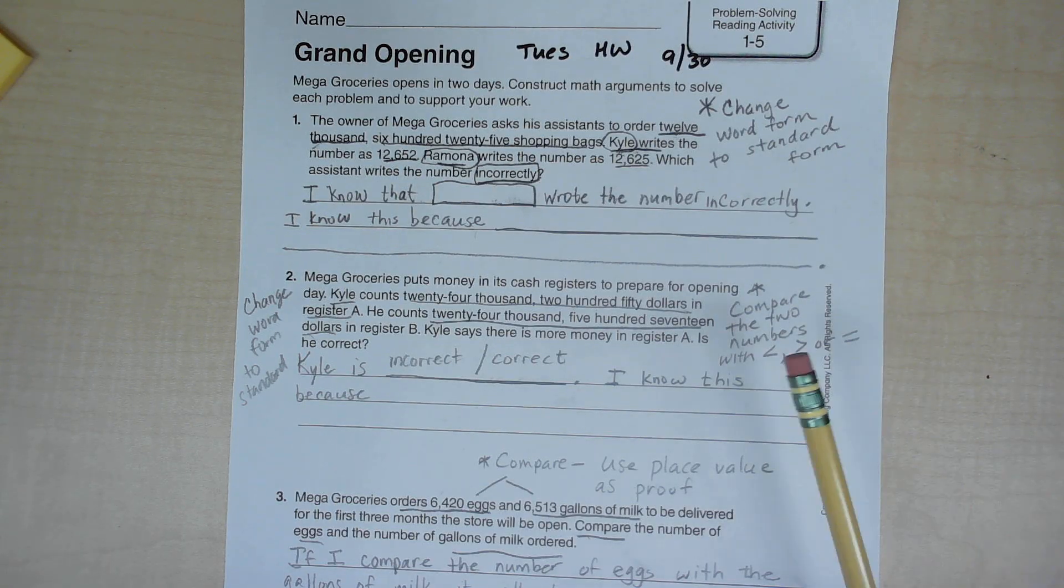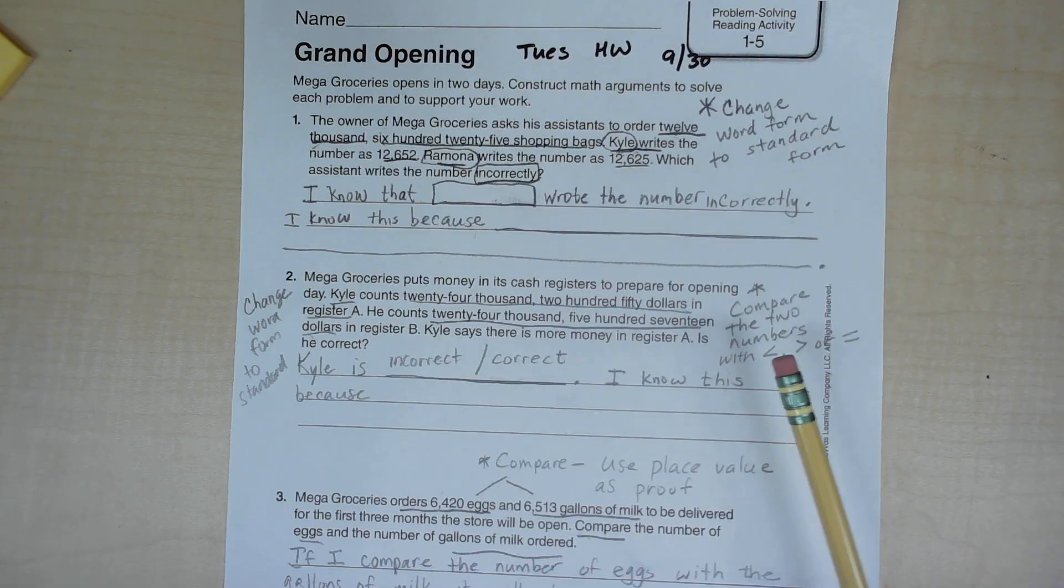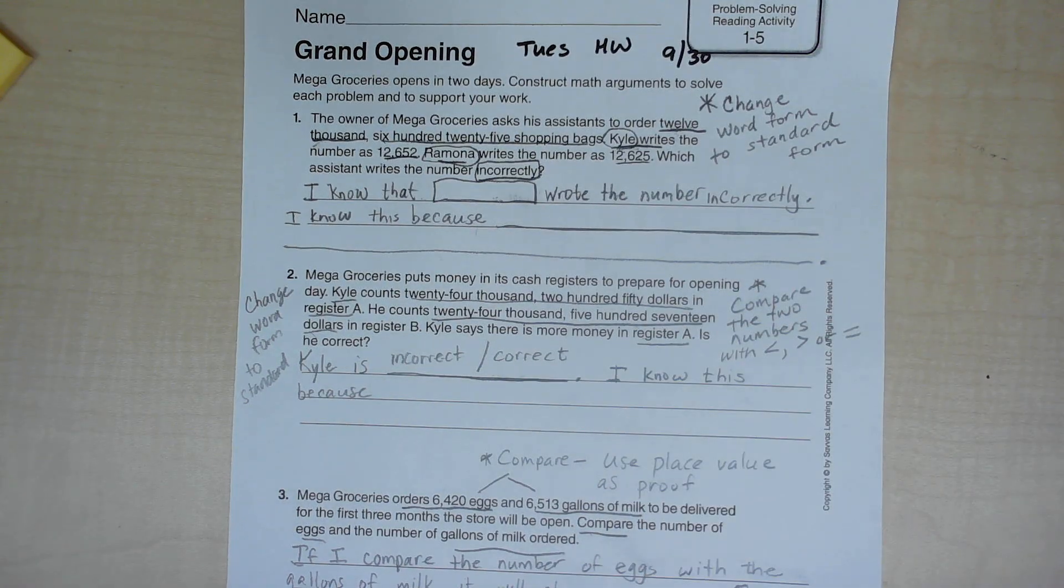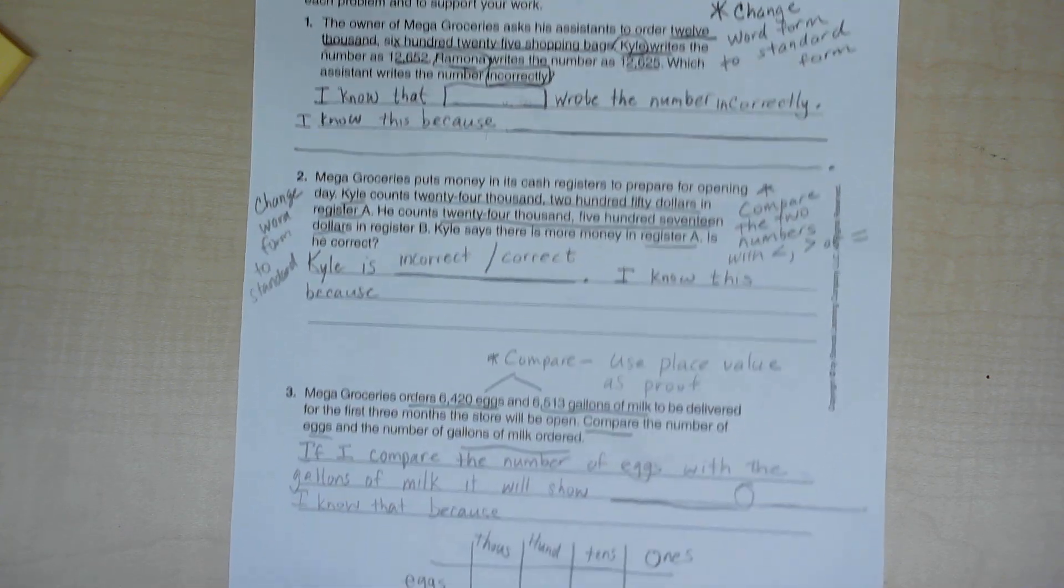You're going to compare the two numbers with either the less than, greater than, or equal symbol. Is there more money in register A? Is he correct? You have to look and find out. Number three.